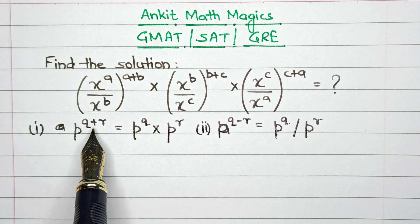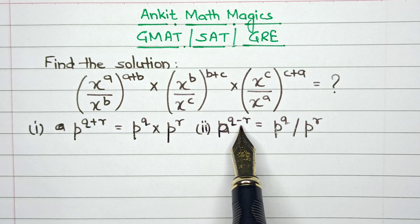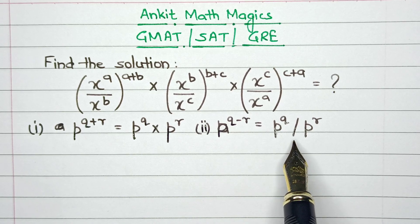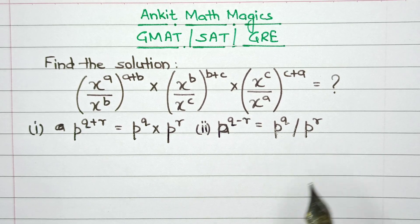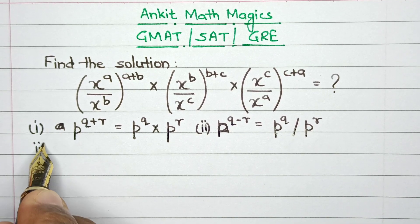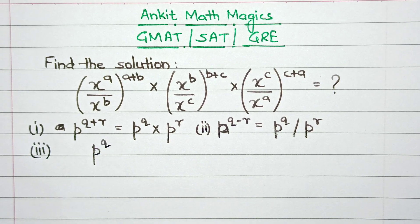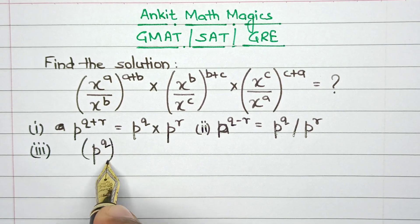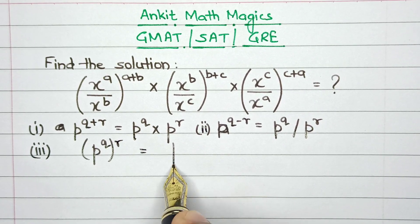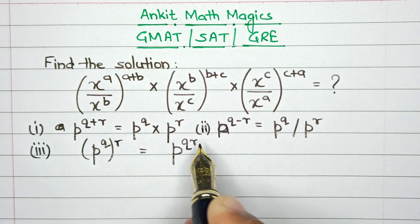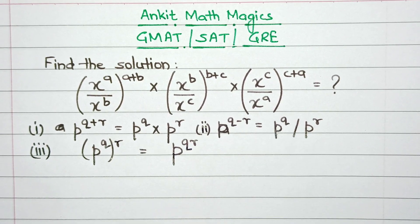So whenever the powers are added they can be expanded in product form, and whenever the powers are subtracted it results in division, with the base remaining the same. The third property is that if we have P raised to the power Q, and then a further power R attached to it, this can be written as P raised to the power Q multiplied by R. These are the three properties we will be using in this question.